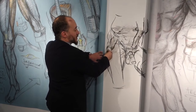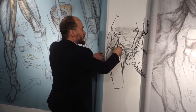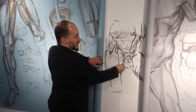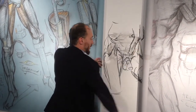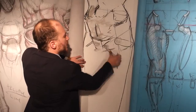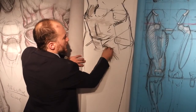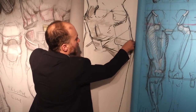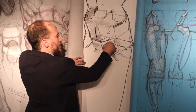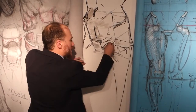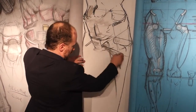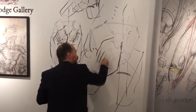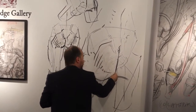The tensor fasciae latae and the sartorius. The brevis is going to run that way into the femur, and the longus is going to run that way into the femur, so we get this crisscross. And then the gluteus maximus comes down like this.